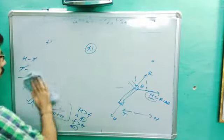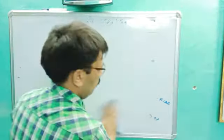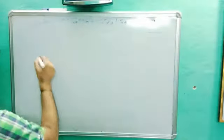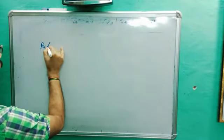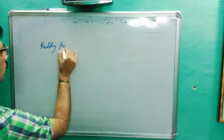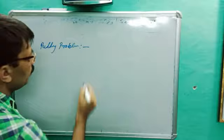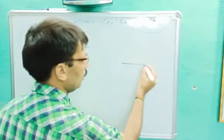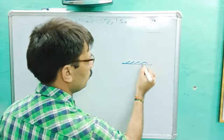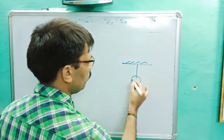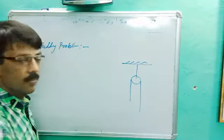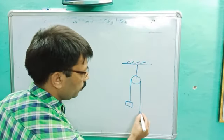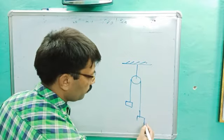Welcome students. Our next topic is the pulley problem, also called motion of connected bodies. Let's suppose a frictionless pulley is hung from a rigid base through which two different mass bodies are suspended.